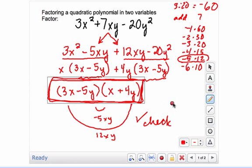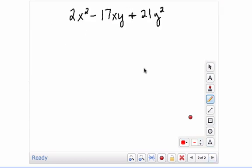Let's look at another one really quickly. 2x squared minus 17xy plus 21y squared. Again, remember we multiply the first and last coefficients. 2 times 21 gives you 42. So I'm looking for two numbers that multiply to give me 42 but add to give me negative 17.